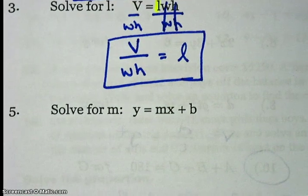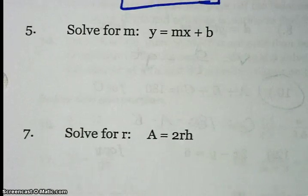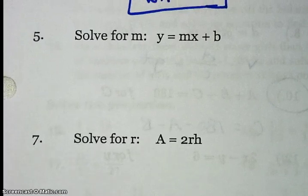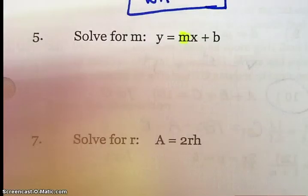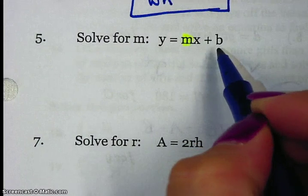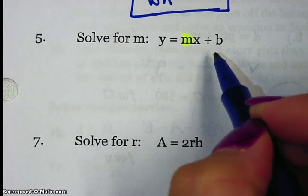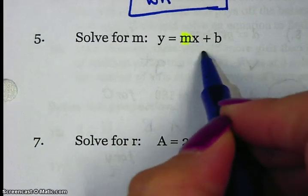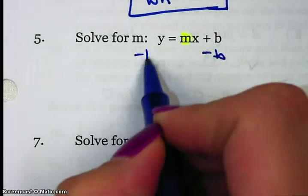Number 5, solve for M. Y equals M, X plus B. So I'm going to find my M. It's right there next to the X. This time I have two terms, which means I'm going to have to use addition or subtraction. I'm going to undo add B by subtracting B from both sides.